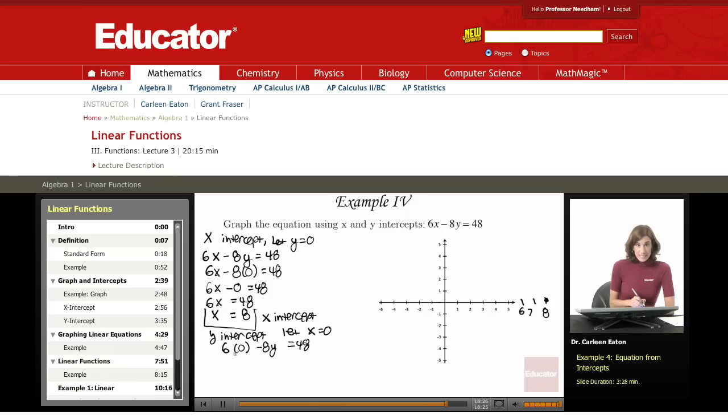This gives me 6 times 0 is 0, so my x drops out, and I get negative 8y equals 48. To isolate the y, I divide both sides by negative 8, giving me y equals negative 6. So that is my y-intercept.